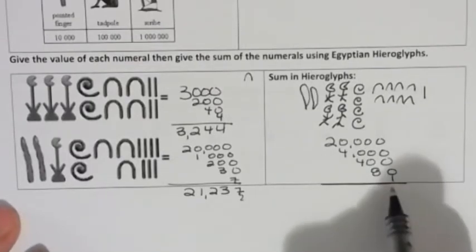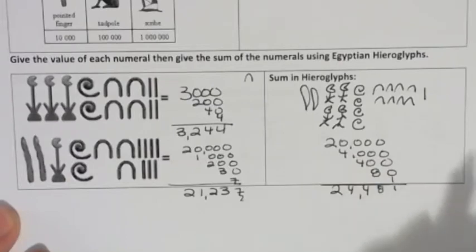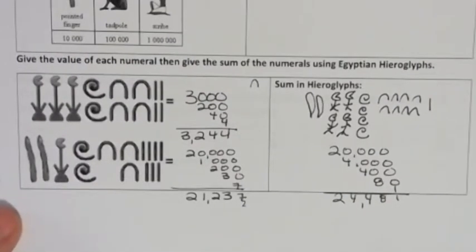So if you add all that together, you get one, eight, four, four, two. 24,481 would be the sum in Hindu Arabic.